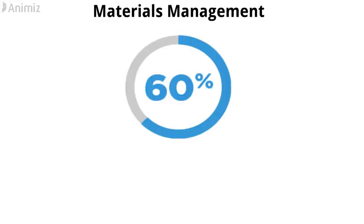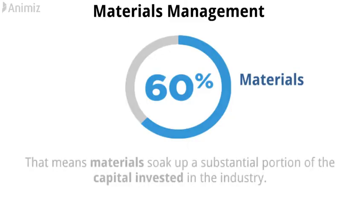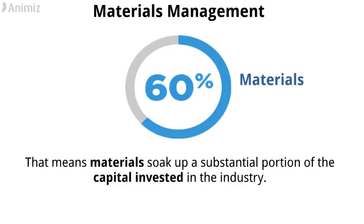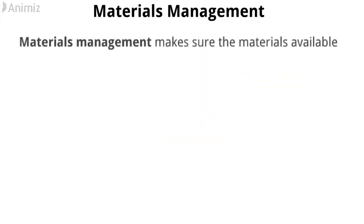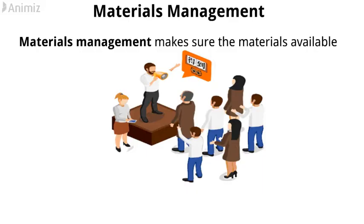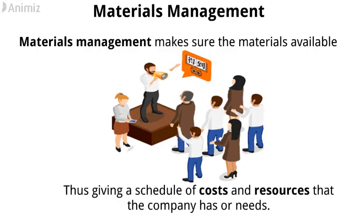Most manufacturing concerns spend more than 60% of the money they take in on materials. That means materials soak up a substantial portion of the capital invested in the industry. Materials management makes sure the materials available are aligned with the customer demands, thus giving a schedule of costs and resources that the company has or needs.